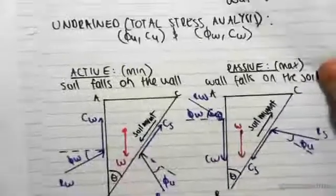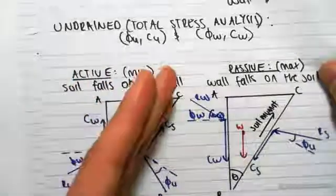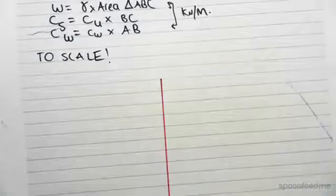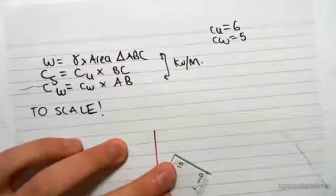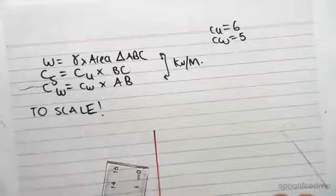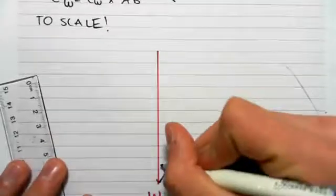Now, Cs is at an angle of theta to the vertical. So we could draw in Cs, which is at an angle of theta.